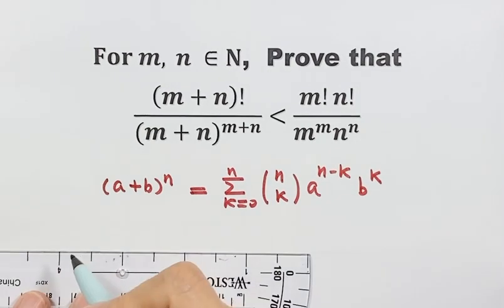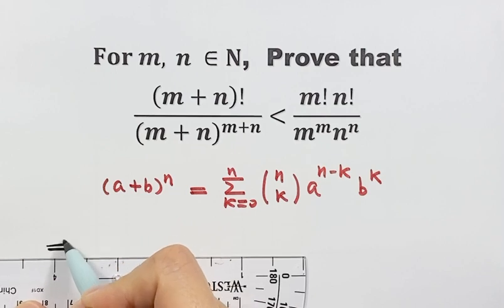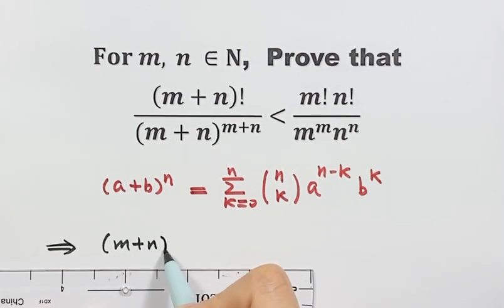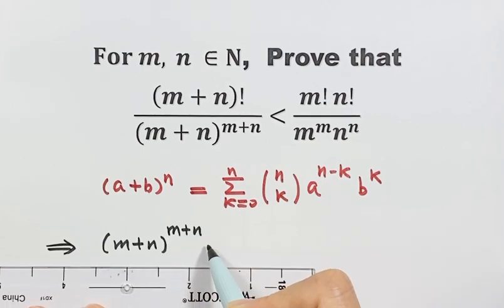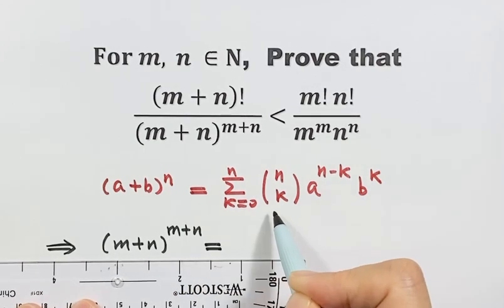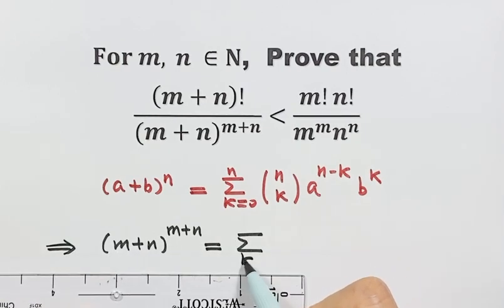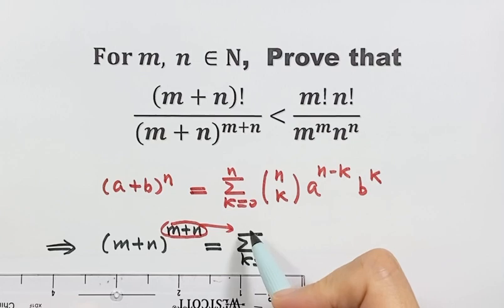Then we have (m plus n) to the power (m plus n). Apply this formula. Then here we have the sum, k from 0 to m plus n.